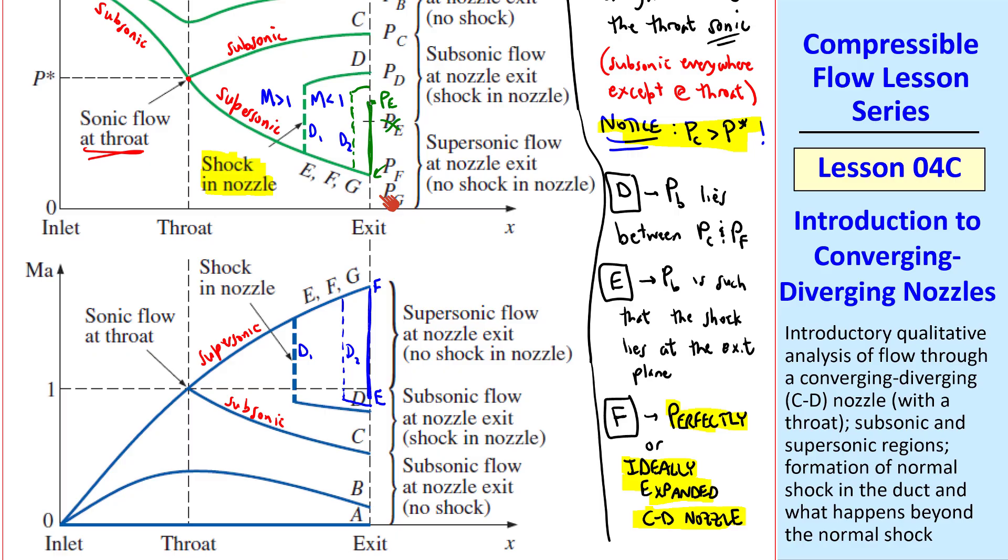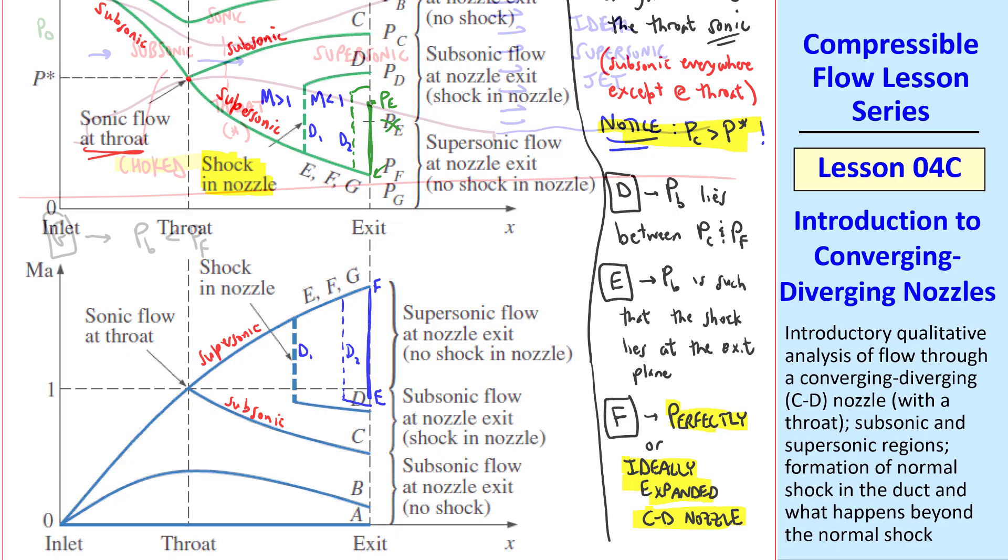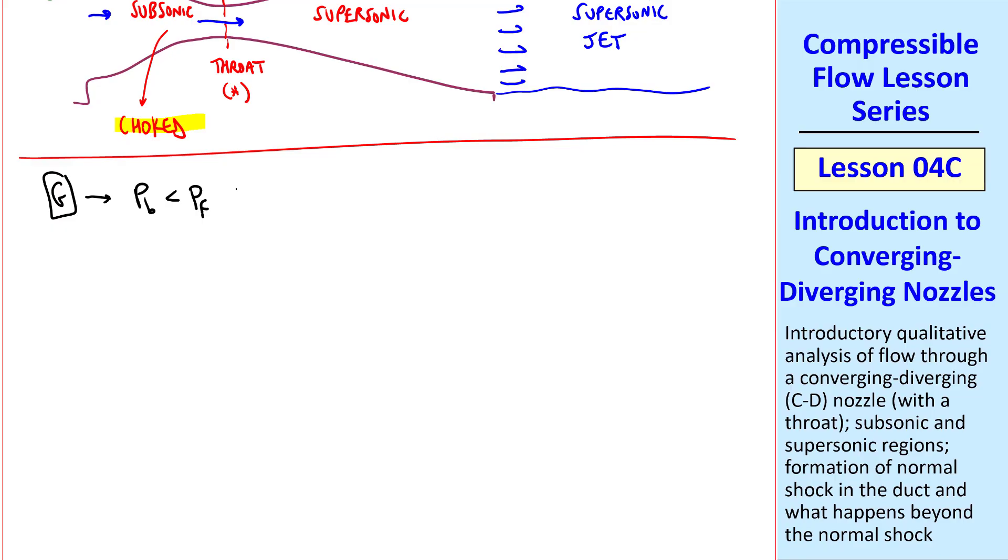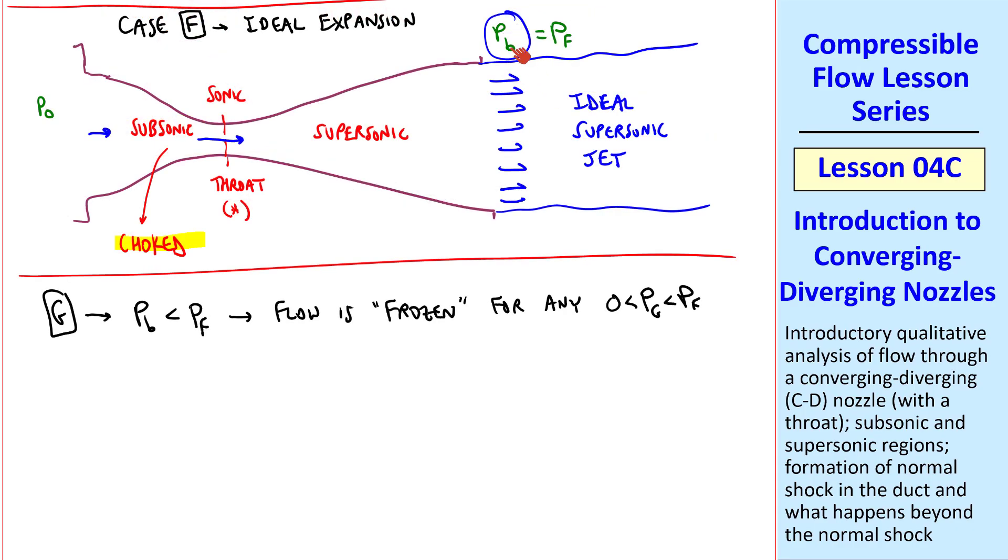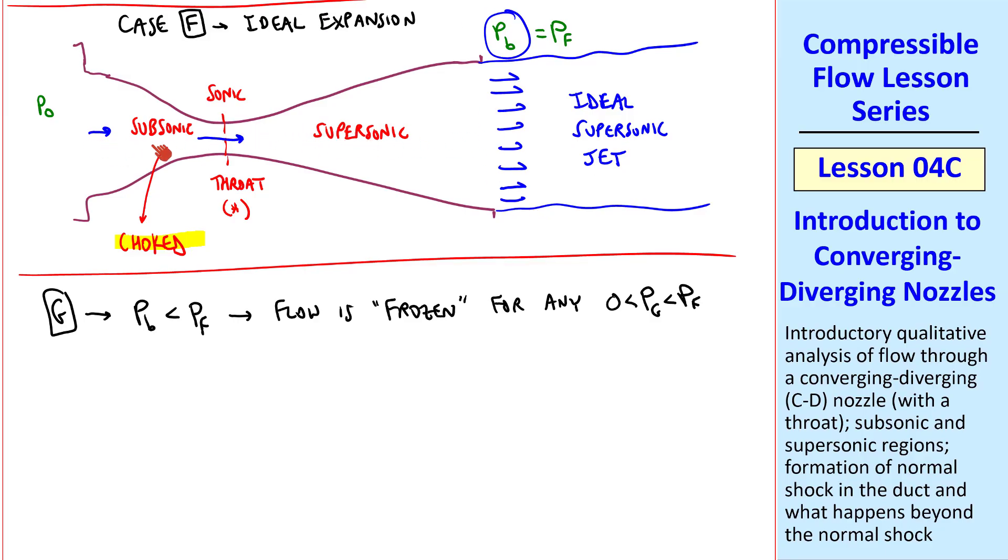Finally, what happens when Pb is less than Pf? We call that case G. When Pb is less than Pf, the flow is frozen. In other words, it doesn't change for any value of Pb between Pf and 0. In other words, you can keep taking this back pressure down all the way to a perfect vacuum, and nothing in this CD nozzle will change. You will get some funny stuff going on back here, which we'll discuss in the next lesson, but the flow is totally frozen here, and nothing you do back here can change that unless Pb becomes greater than Pf. Then you'll start seeing a shock.